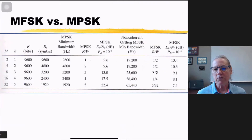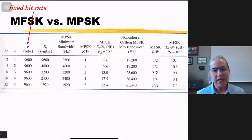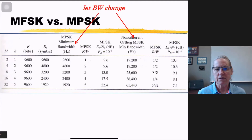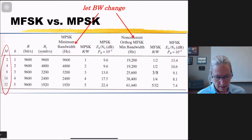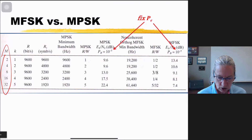This table gives another way of representing the tradeoff between power efficiency and spectral efficiency. We fix the bit rate at 9600 bits per second and examine MPSK and MFSK. These modulation schemes occupy different bandwidths, and already at the same data rate MPSK is more bandwidth efficient than MFSK.